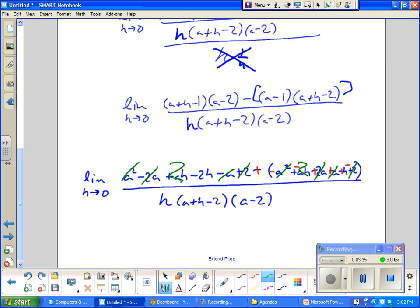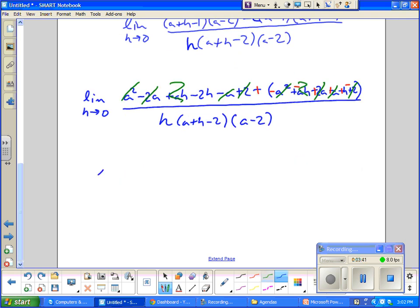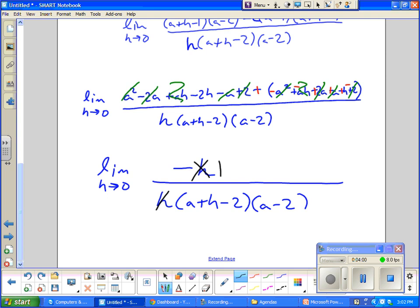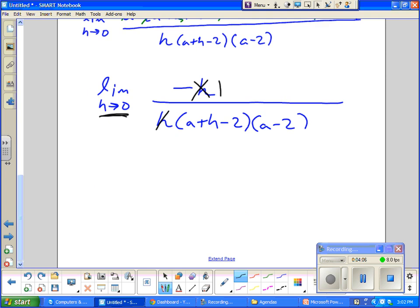So negative 2h and a positive h. So I end up with negative h. So I'll rewrite this. Limit as h goes to zero. Negative 2h plus h is negative 1h over that. And now what happens? I can cancel the h. And I can now insert zero for h because the denominator is no longer zero. And I get this is equal to negative 1. This goes to zero. So I think it becomes a minus 2 quantity squared. a minus 2, a minus 2.